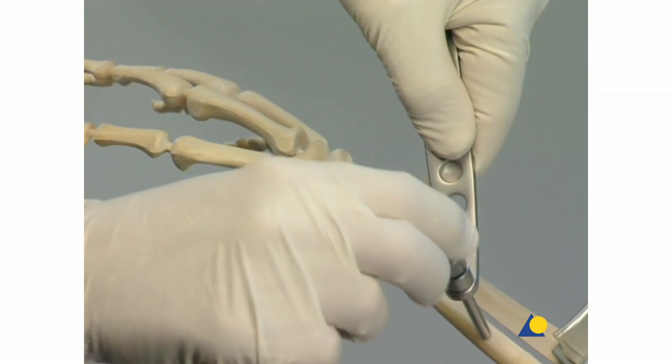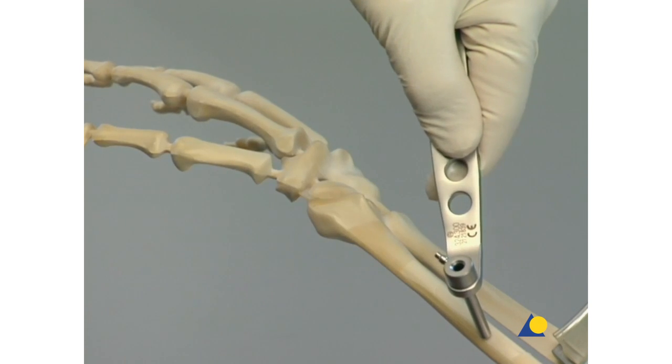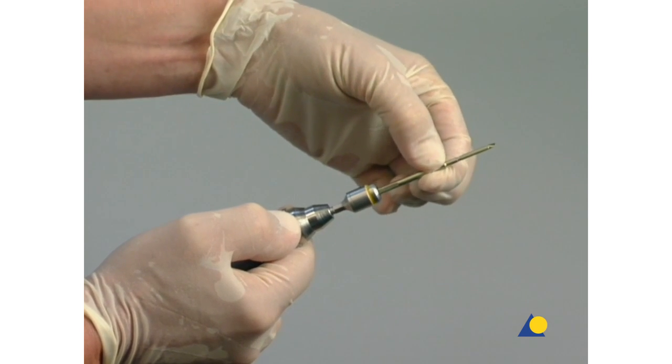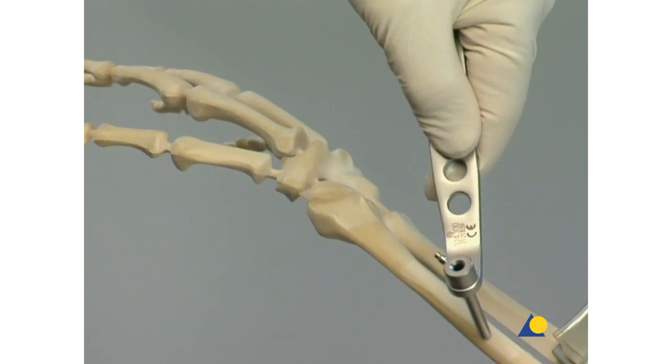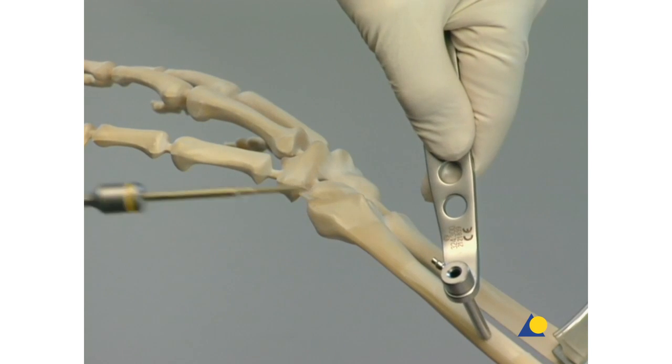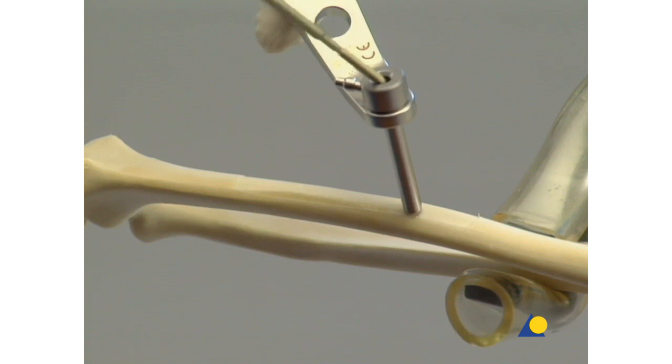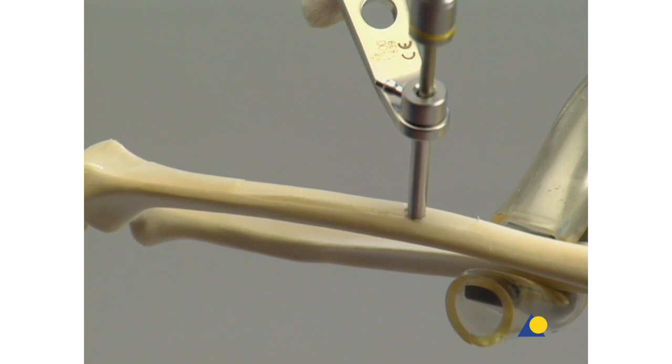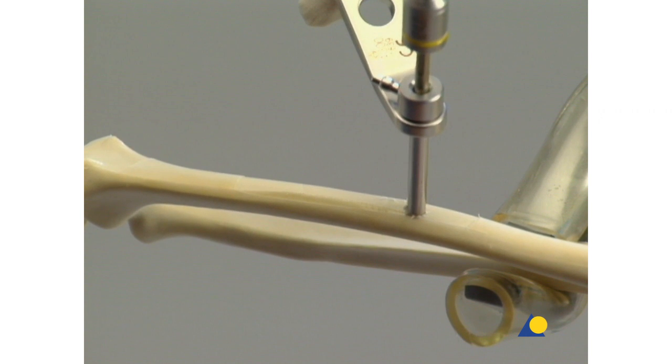The trocar and drill sleeve are removed. The self-drilling Schanz screw is inserted into the adapter. The power drive is used to advance the Schanz screw through the threaded drill sleeve until the tip is anchored in the far cortex. In the clinical situation, irrigation is recommended while inserting the Schanz screws.